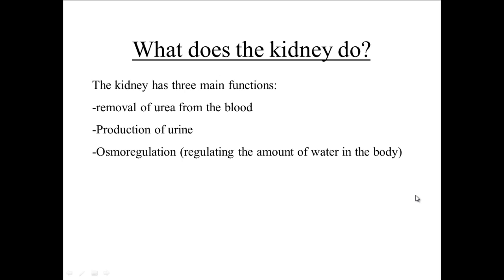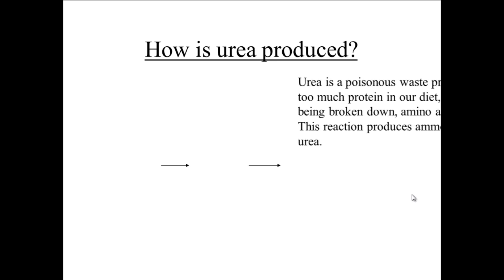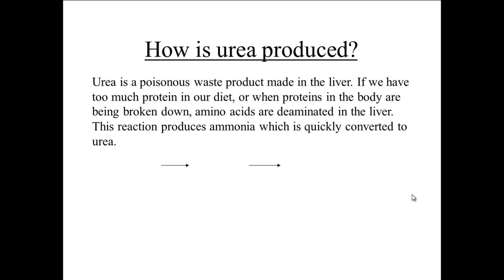The kidneys are involved in excretion, primarily of urea. Urea is a poisonous waste product and it's made within the liver.